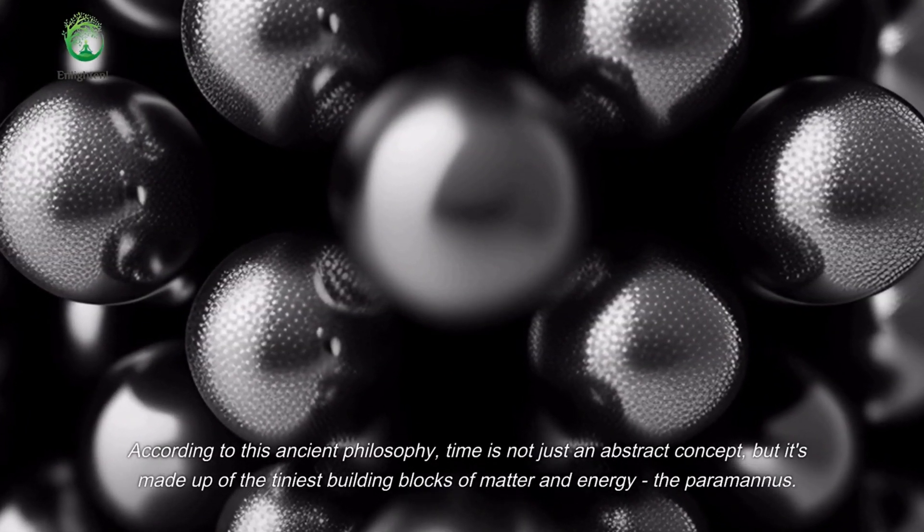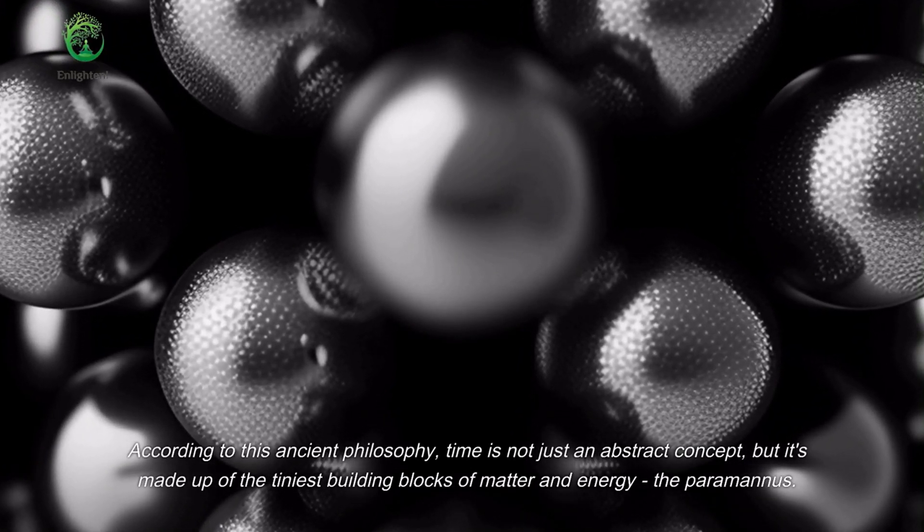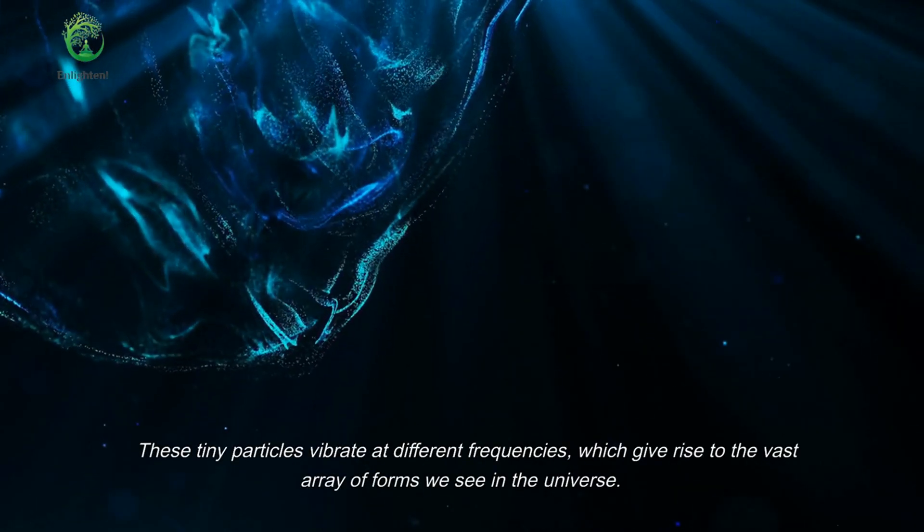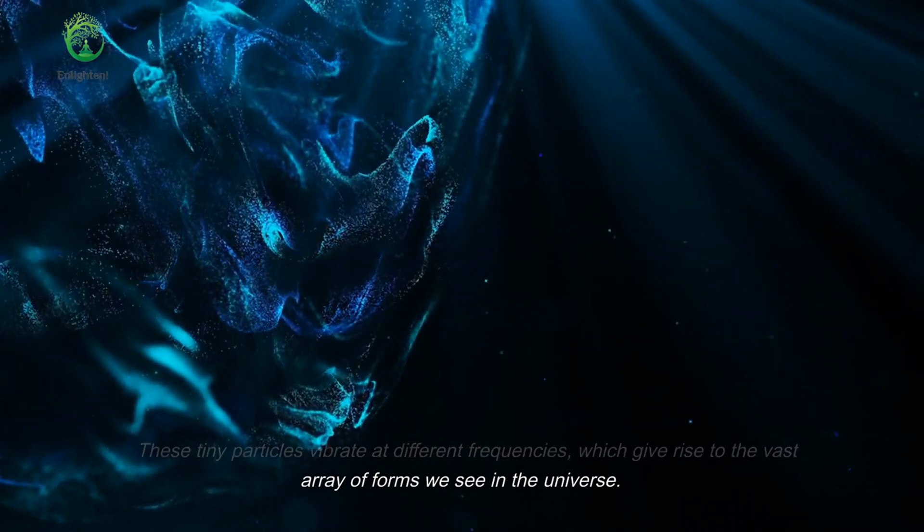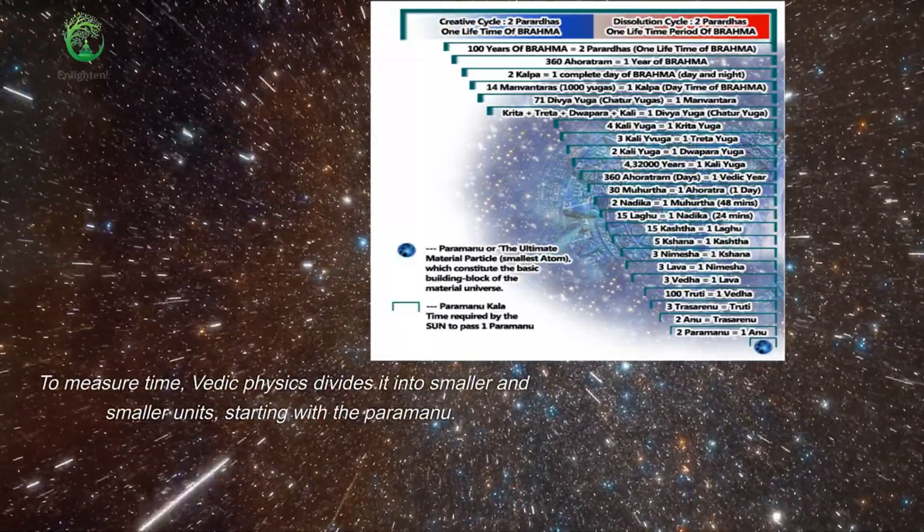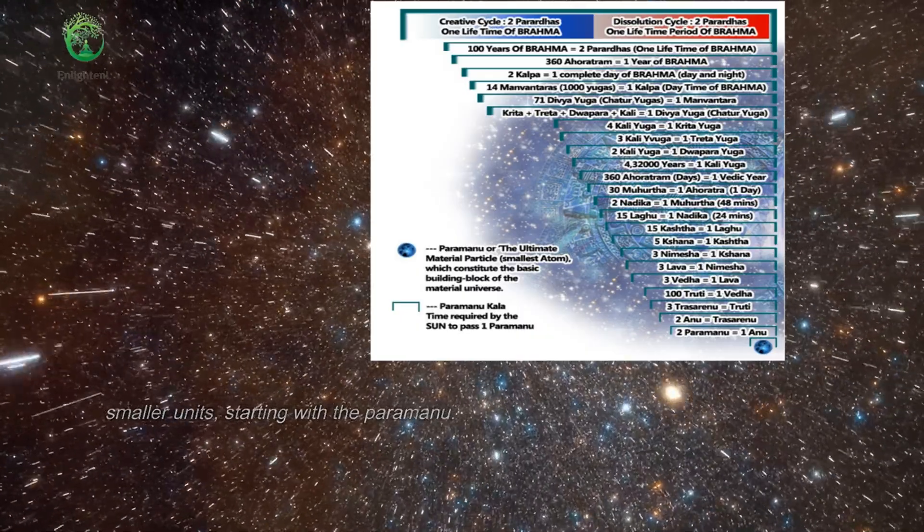According to this ancient philosophy, time is not just an abstract concept, but it's made up of the tiniest building blocks of matter and energy, the paramanus. These tiny particles vibrate at different frequencies, which give rise to the vast array of forms we see in the universe. To measure time, Vedic physics divides it into smaller and smaller units, starting with the paramanu.